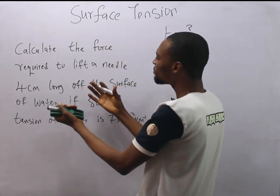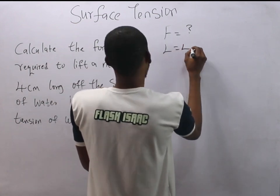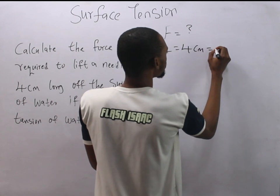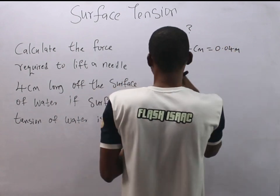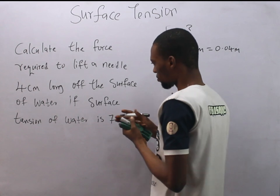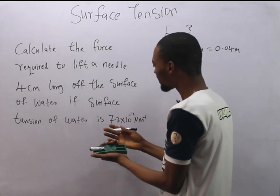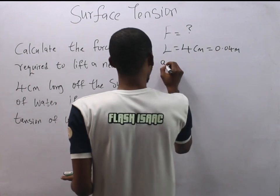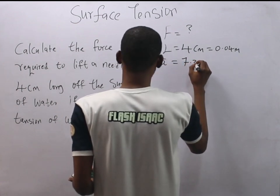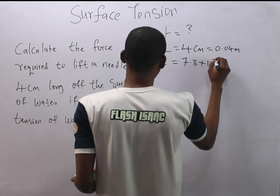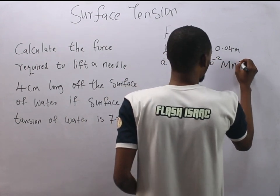The needle is 4 cm long, so the length L is equal to 4 cm, which equals 0.04 m. We need to lift it off the surface of water. The surface tension of water is given as 7.3 × 10⁻² newton per meter.